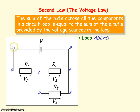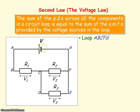If we consider circuit loop A-B-C-F-G, the components in the loop are R1 and R2. So the sum of the PDs across these components will be V1 plus V2, and that will equal the EMF of the voltage sources in that loop, which is this battery here. So the EMF will equal V, and we can say that V will equal V1 plus V2.